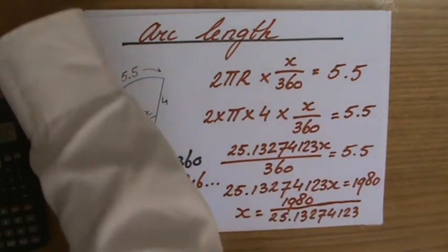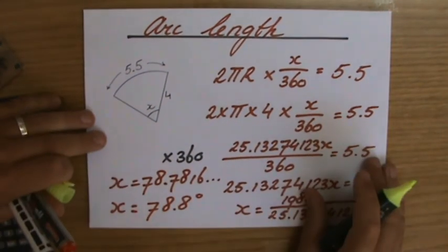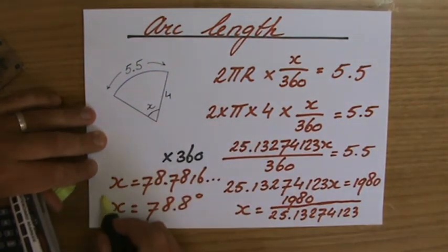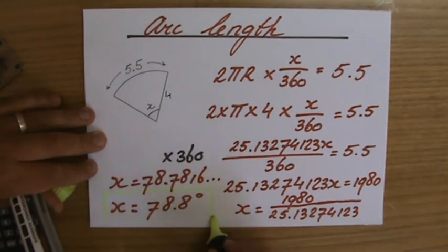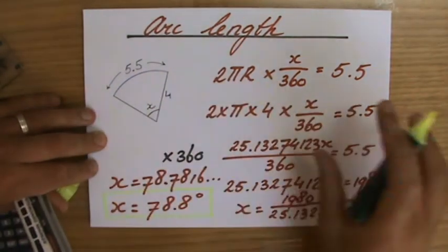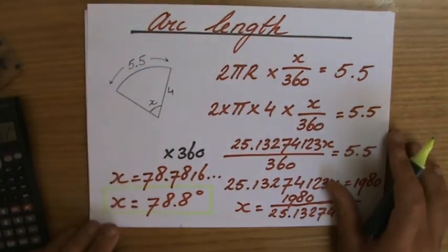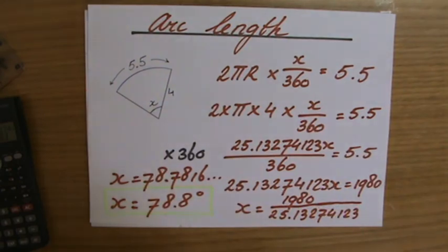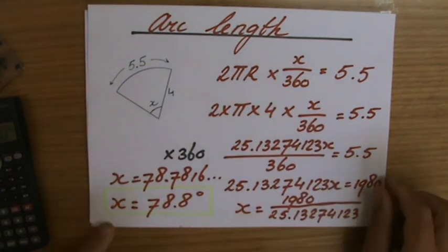Okay, so that is my answer. And just going back to the question, I said, well, it's a little bit less than a quarter of a circle, isn't it? Yeah, I said, well, 80 degrees, 78.8 degrees. Yeah, so that indicates that I'm correct. Now, a lot of numbers, it looks quite messy.